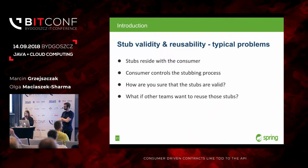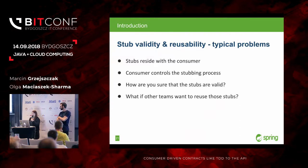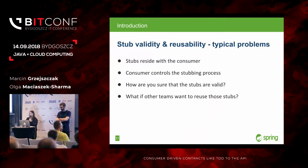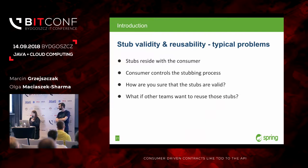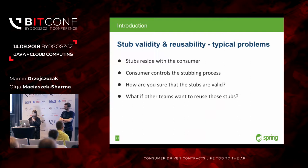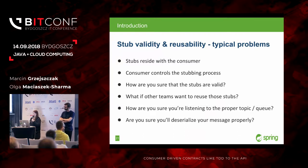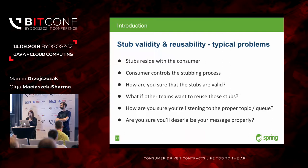Another problem: if we have a solar-system architecture with one app used by many consumers — typically when migrating from a monolith to microservices — many teams write the same stubs, exactly the same or slightly different, and they don't know they're duplicating all this work. There should be a way to reuse once-written stubs. The same thing happens with messaging — anything can go wrong because these stubs have no validation.